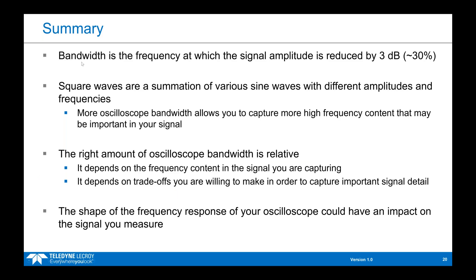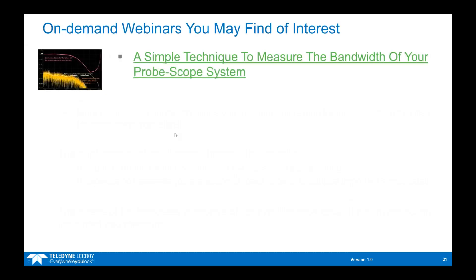Some closing thoughts: bandwidth is the frequency at which your signal's amplitude is reduced by 3 dB, or approximately 30% reduction. Square waves are a sum of various sine waves at various frequencies, so the higher the bandwidth, the more sine waves the oscilloscope can process and the more ideal your square wave looks. The right amount of bandwidth is relative — it depends on the signal, its frequency content, and the trade-offs you're willing to make between capturing odd harmonics versus the price you're paying. Additionally, different frequency responses of oscilloscopes can impact the shape of your signal.